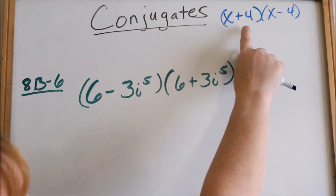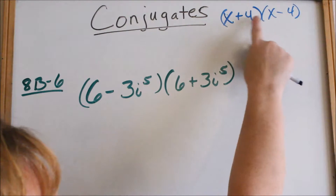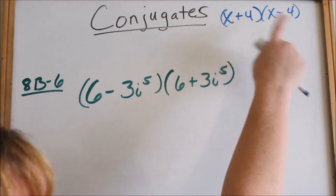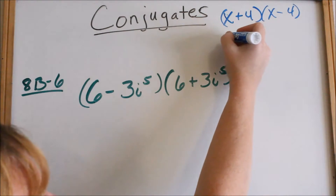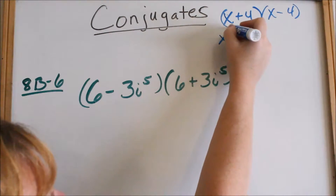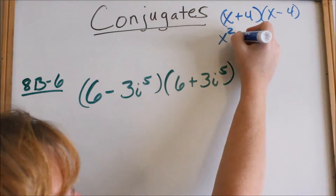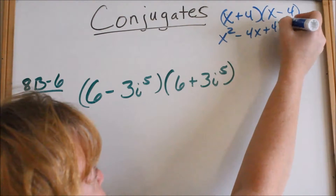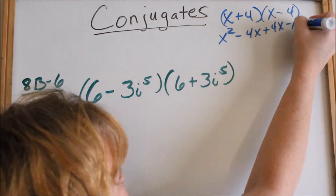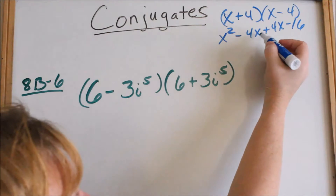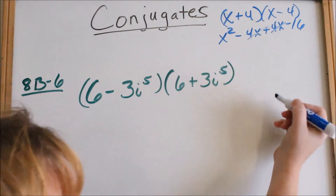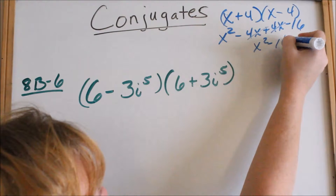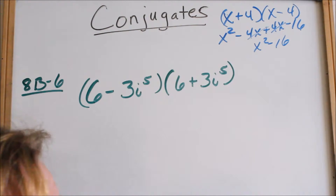Conjugates look the same, except the signs are different. Now, when you multiply conjugates out, if you multiply this out, you get x squared. If you FOIL it out, minus 4x plus 4x minus 16. When you multiply conjugates out, the middle term cancels, and you're only left with the difference of two squares.